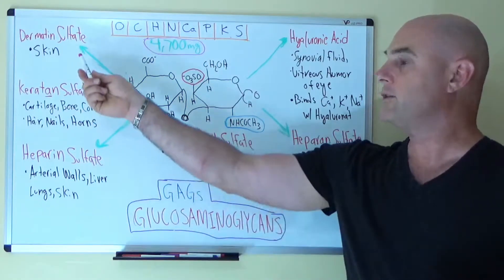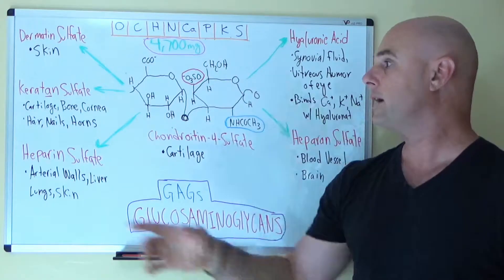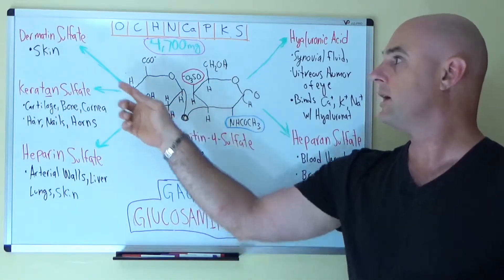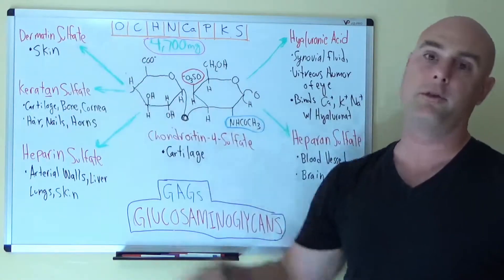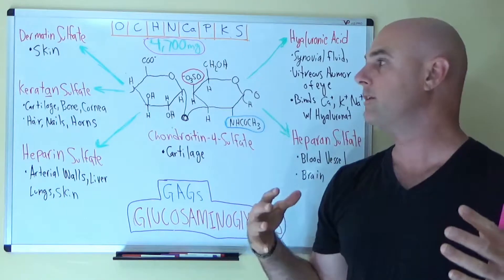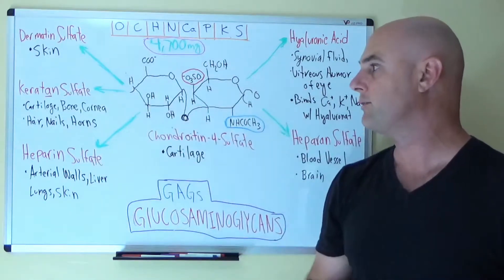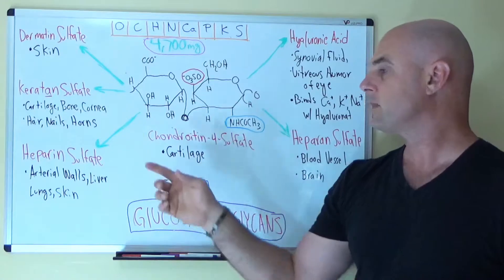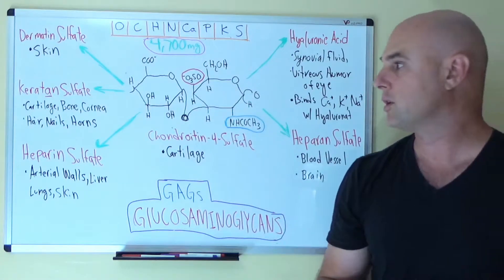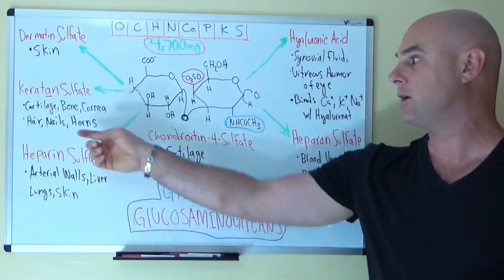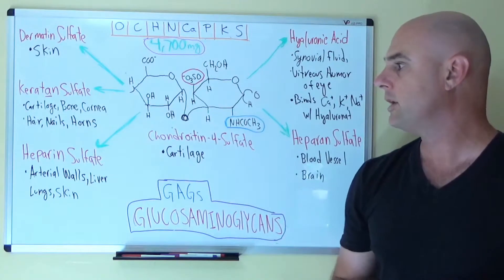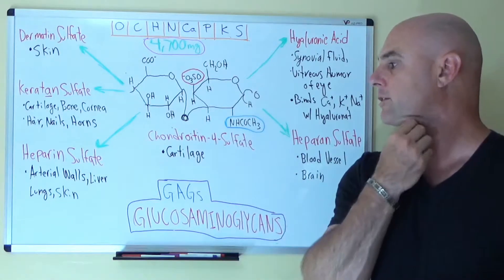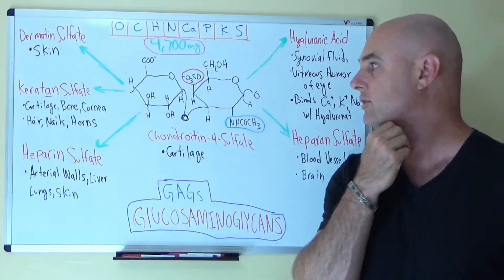Let's go around and see where we use sugar in the body. We have dermatan sulfate, which is another sulfonated polysaccharide found in the skin. Keratin sulfate, which is found in cartilage, bone, the cornea, hair, and nails. Heparin sulfate is found in the arterial walls, the liver, lungs, and skin.